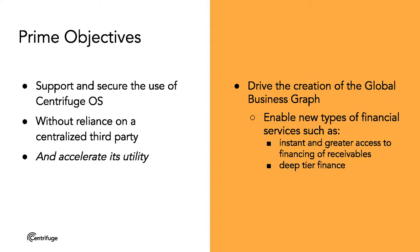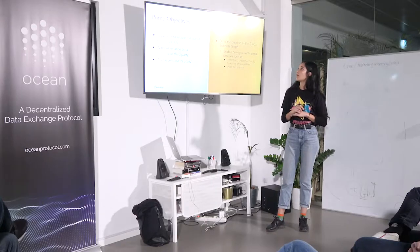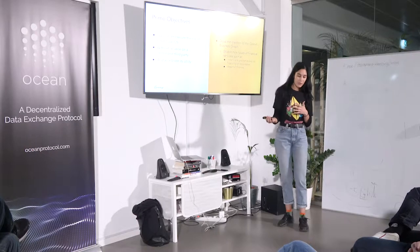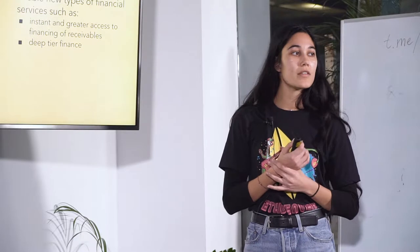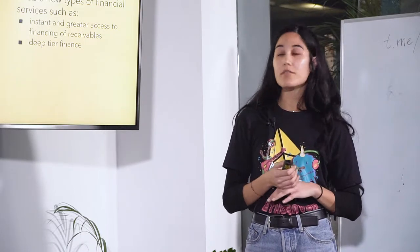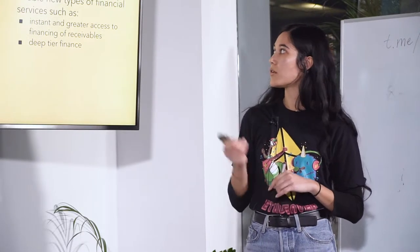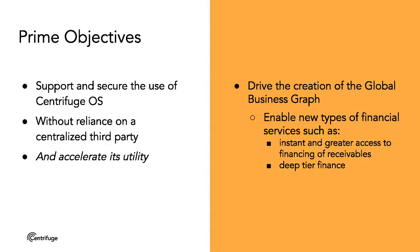So, what are our prime objectives? We really want the token to support and secure the use of Centrifuge OS without reliance on a centralized third party — and that includes Centrifuge the company — as well as accelerate its utility. One thing that Philip mentioned before that I'm going to dive into is the global business graph. We really think this is the long-term value of Centrifuge, so we want the token to support this as well, because we think it's going to enable new types of financial services.